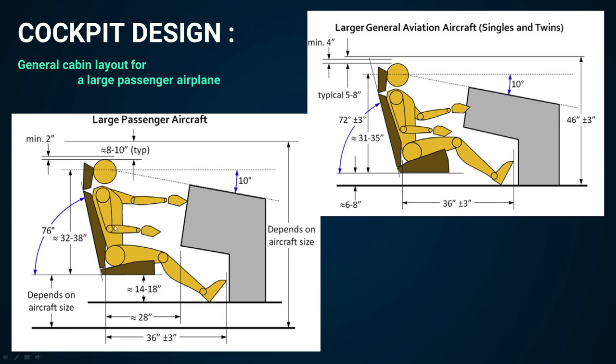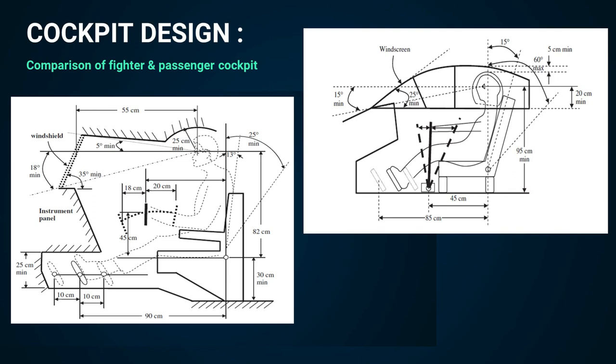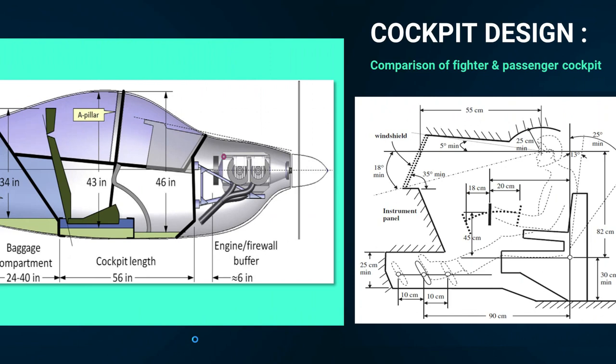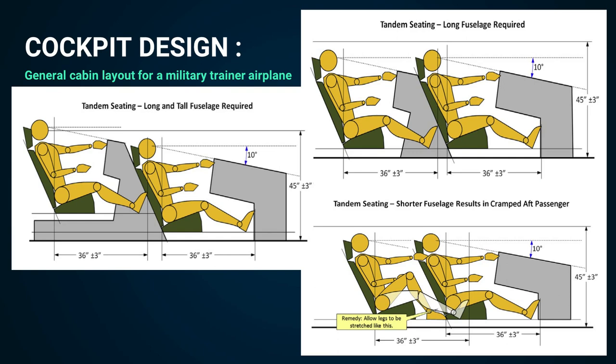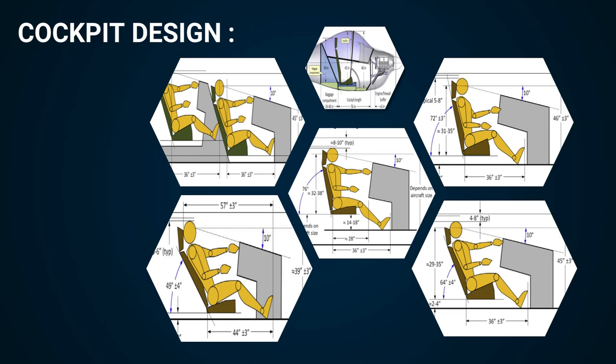There is a comparison of data between fighter and passenger aircraft. This is for the small aircraft, this is for a sailplane, and this is a special tandem type category — mostly used for military trainer aircraft. The size depends on the design and the number of passenger requirements accommodated in that particular flight. As a design engineer, you just need to consider the type of cockpit, its dimensions, and its layout.